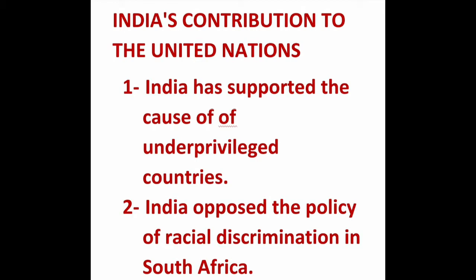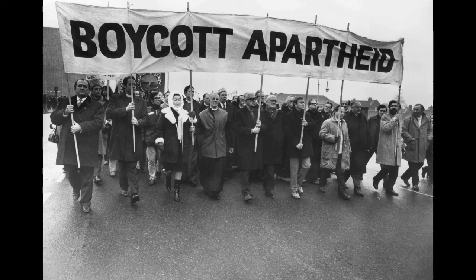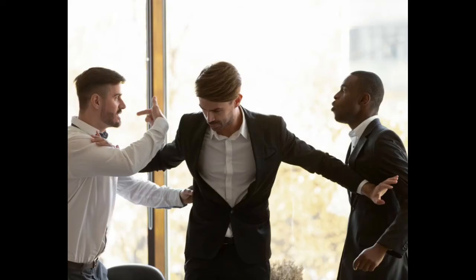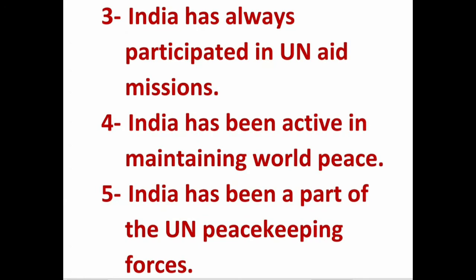India opposed the policy of racial discrimination in South Africa. Racial discrimination was popularly known as apartheid. When apartheid was abolished in South Africa, India re-established its relations with South Africa.